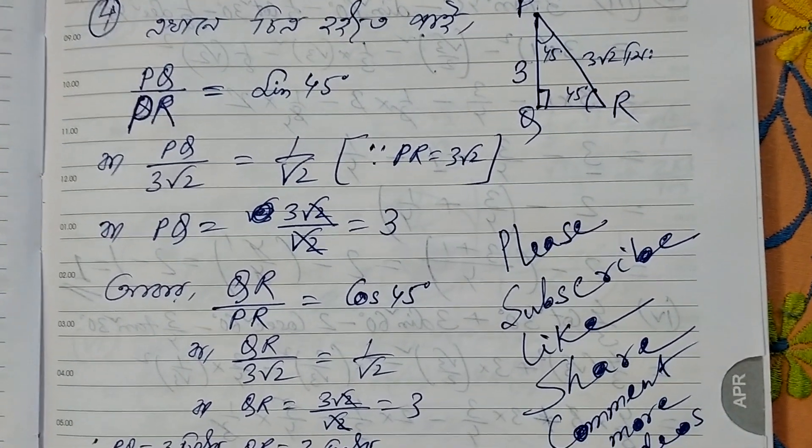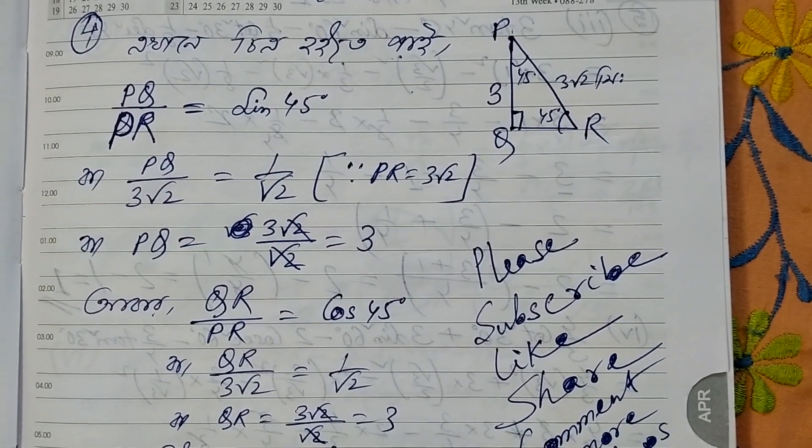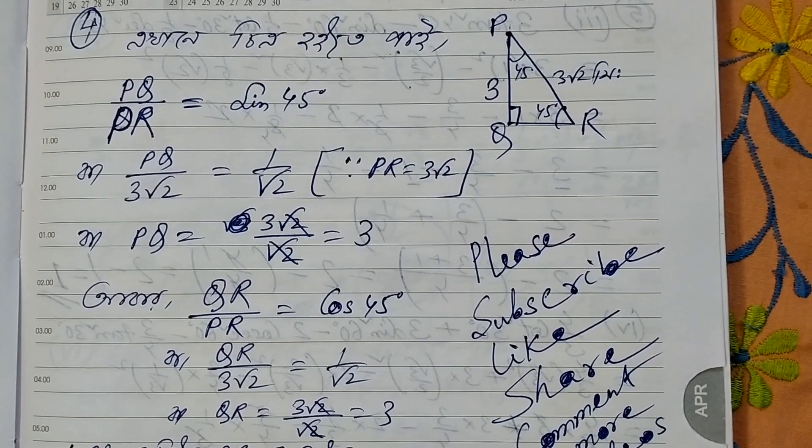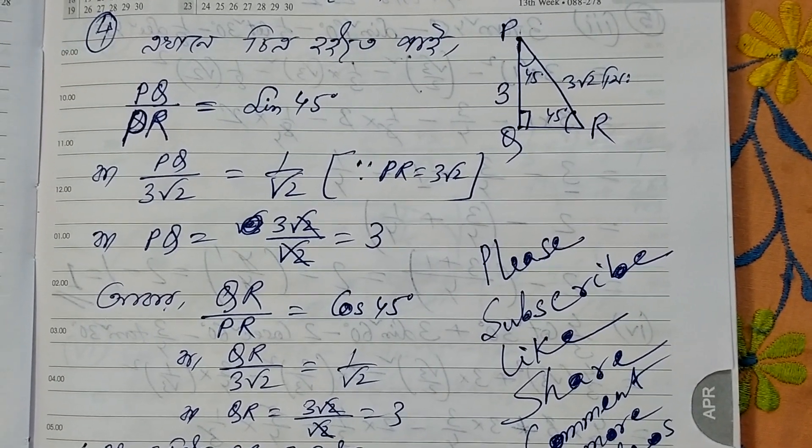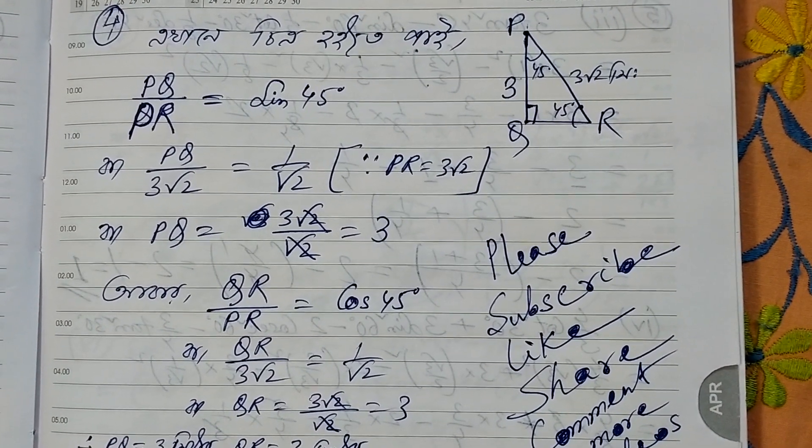Then let's start. The next question is PQ by QR. The sign of R is written on the sign of R. So PQ is 1 by 2, and P8 is 3 by 2. The sign of R is written on the sign of R2.